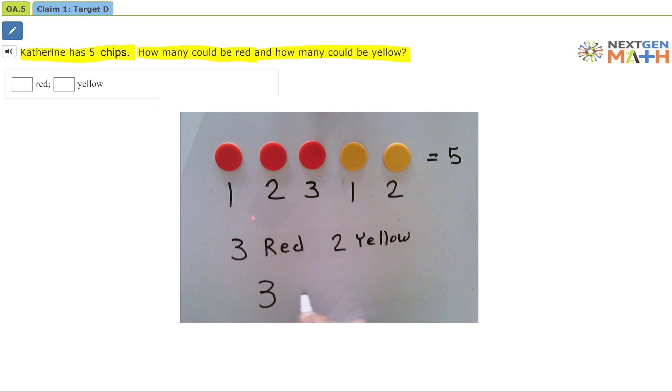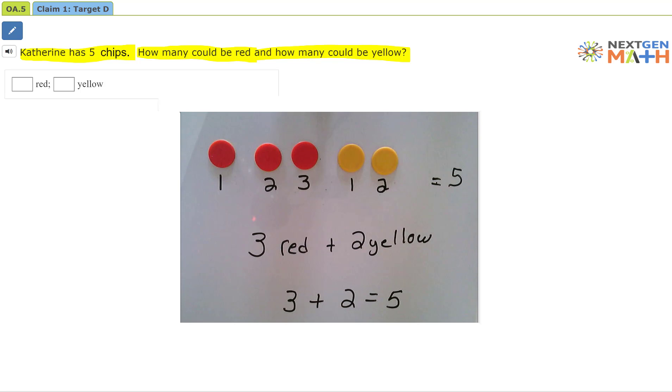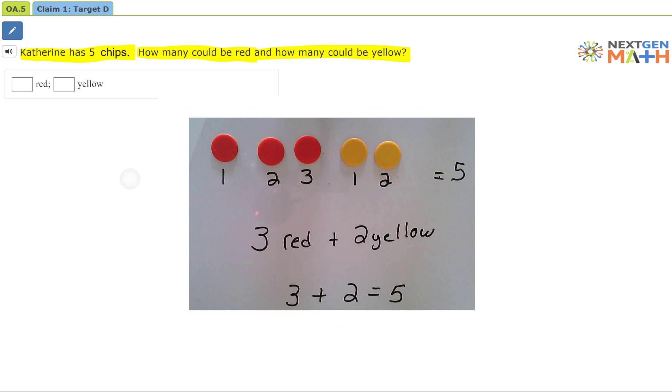So three plus two equals five. We could have three red chips and two yellow chips which equals five chips. So how many could be yellow and how many could be red? We could have three red and two yellow.